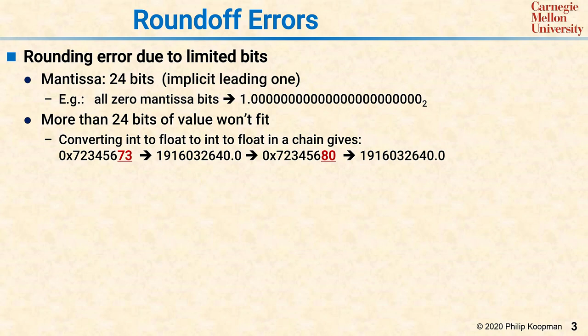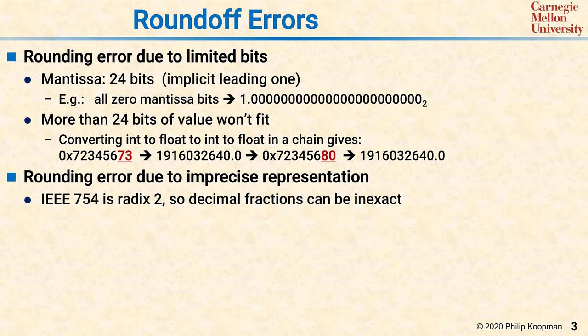Okay, well that might not be so bad, but when you start accumulating those round-off errors in a consecutive set of computations, the results can be much worse. A fundamental issue is that IEEE 754, which is the IEEE floating-point standard, is radix 2. That means the mantissa is base 2. Humans are used to thinking in base 10.